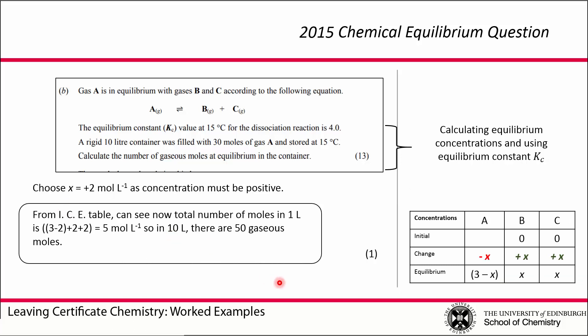Going back to our ICE table, the question is asking us what is the total number of gas moles at equilibrium. Now we can just add up our concentrations. We know we have 2 moles of C, 2 moles of B, so that's 4, plus 3 minus 2 of A. So 2 plus 2 plus 1 is 5 moles per liter. We have a 10 liter flask, so that means 5 moles per liter gives us 50 gaseous moles.